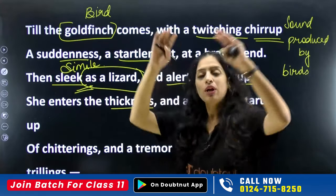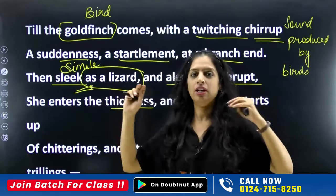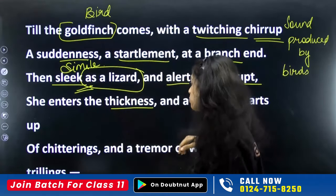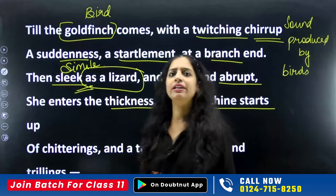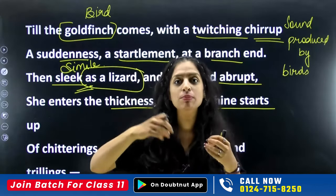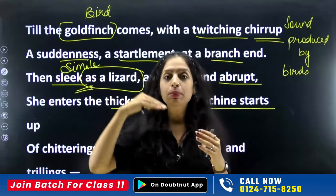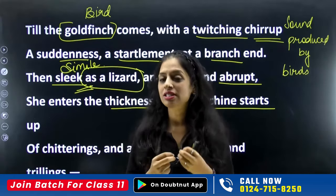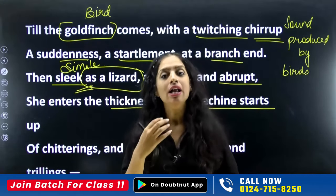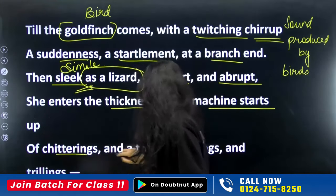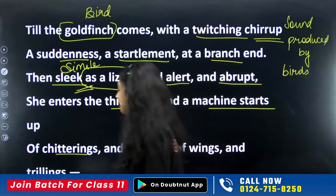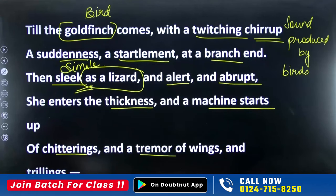She enters the thickness — the laburnum tree is dense, so 'thickness' refers to that dense interior. As soon as she enters, it is as if a machine has been oiled and starts working — a machine starts up. Similarly, as soon as this bird enters the tree and starts her activity, the whole tree comes alive with chitterings, a tremor of wings, and trillings. All these sounds show that there is now activity and movement because of the bird's arrival.